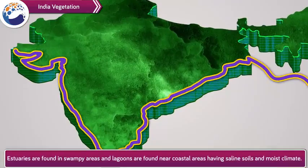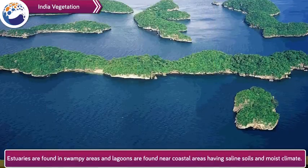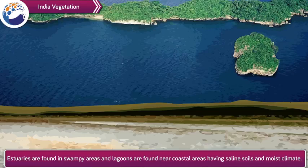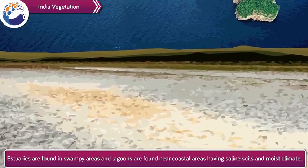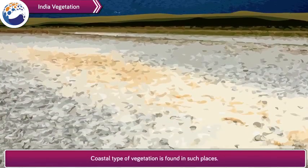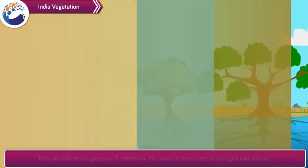Estuaries are found in swampy areas and lagoons near coastal areas having saline soils and moist climate. Coastal type of vegetation is found in such places. They are called mangroves or Sundarbans. The wood of these trees is oily, light and durable.